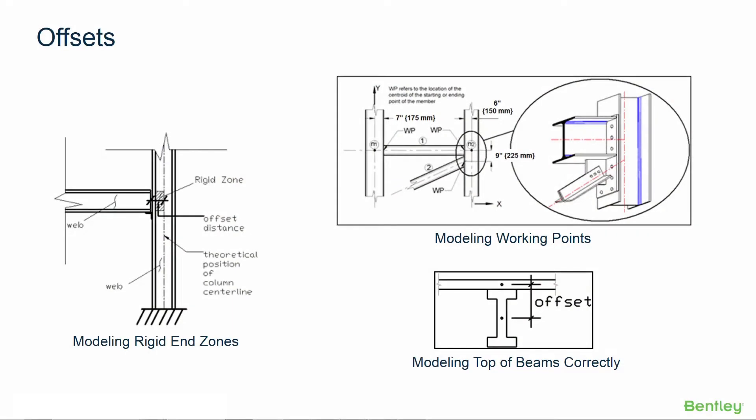In the mathematical model, assumptions are made that do not necessarily reflect the actual conditions on the physical structure. One of these assumptions relates to the actual start and end locations of the member. To correctly model the behavior and location of structural members, you can use the offset specification.